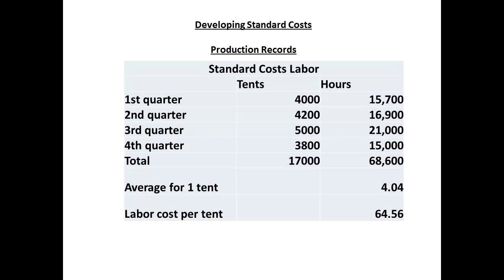Where do our costs come from? Standard costs can be developed from analysis of previous production records. In this example, we have shown the production records for direct labour for the previous year. The total hours and the total tents produced are shown. This gives a figure of around 4 hours direct labour per tent, and a direct labour cost of around $64.